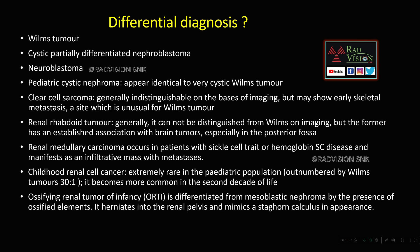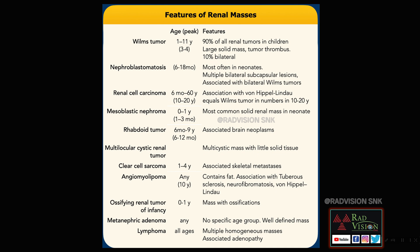The differential diagnosis includes Wilms' tumor, cystic partially differentiated nephroblastoma, neuroblastoma, clear cell sarcoma of the kidney, rhabdoid tumor, renal medullary carcinoma, childhood renal cell carcinoma, and ossifying renal tumor of infancy. Based on age, Wilms' tumor has a peak incidence between 3 to 4 years, with 90% unilateral and 10% bilateral cases. In infants 6 to 8 months, bilateral nephroblastomatosis in a subcapsular location can be suspected.